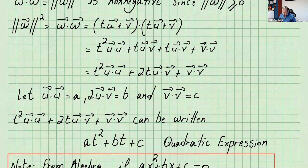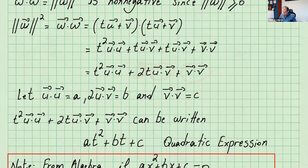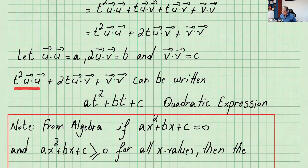Now if we call u dot u to be a, and 2 times u dot v to be b, and v dot v to be c, then substituting we get a·t² + b·t + c. This is a quadratic expression.